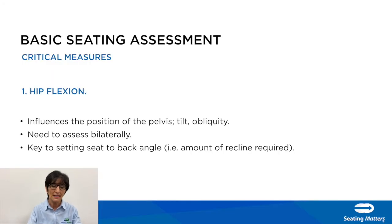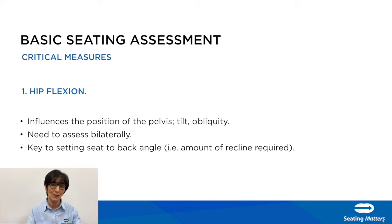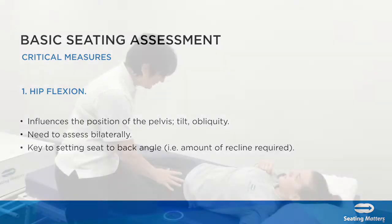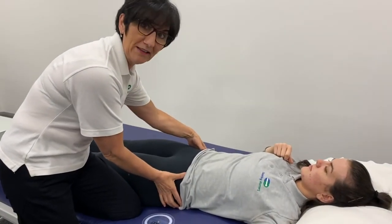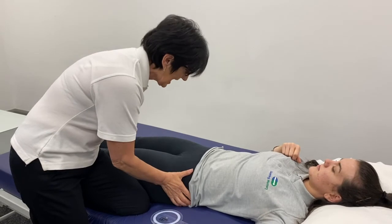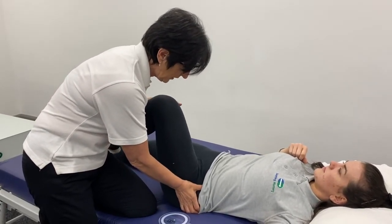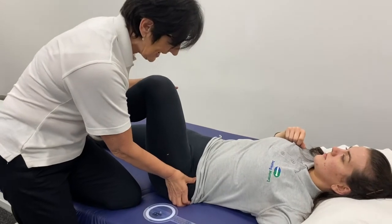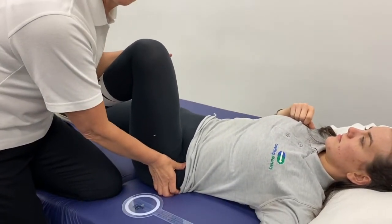The first critical measure is hip flexion. Hip flexion influences the position of the pelvis — if incorrect, it can cause tilt and obliquity. You need to assess hip flexion bilaterally, and it's the key to setting the angle of the back. Keep your thumb on the ASIS and see how much hip flexion you can achieve without causing resistance. If you over-flex the hip, the ASIS will start to rotate — so over-flexing the hip causes hip rotation.